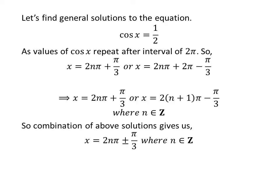Combining the above solutions gives us the general solution of the equation as two times n times pi plus or minus pi upon three, where n is an integer.